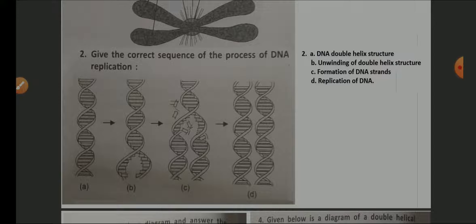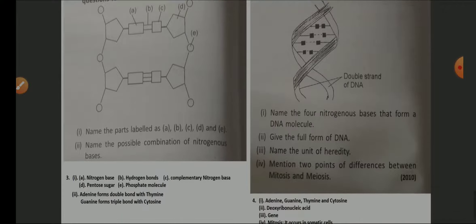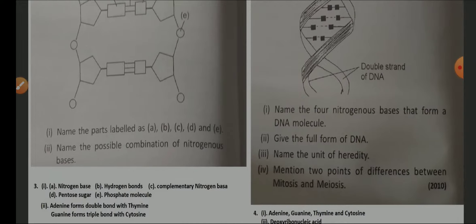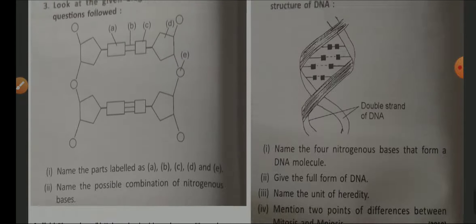Questions three and four refer to the diagram of DNA structure. Label the parts A to E: A is nitrogenous base, B is hydrogen bonds, C is complementary nitrogenous base, D is pentose sugar, and E is phosphate. For possible combinations of nitrogen bases: adenine forms double bonds with thymine, and guanine forms triple bonds with cytosine.